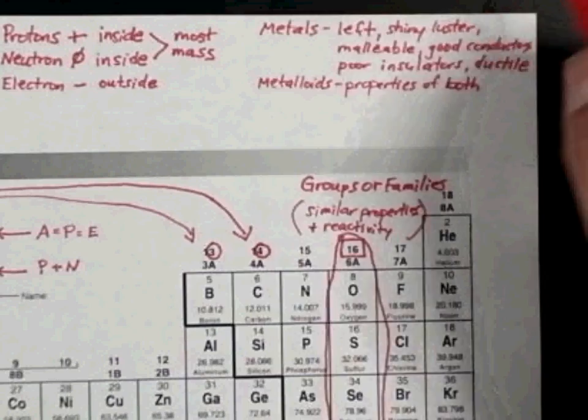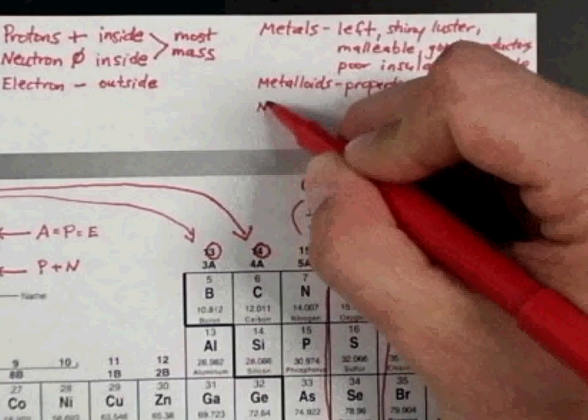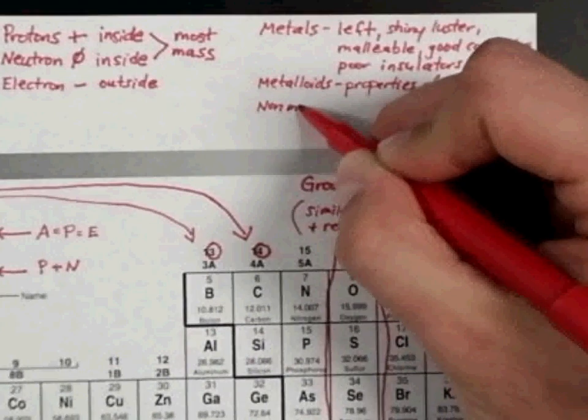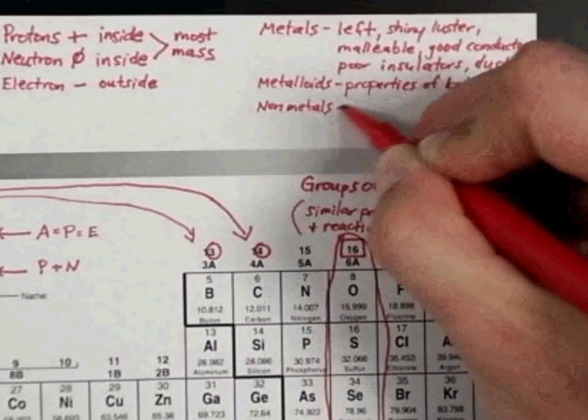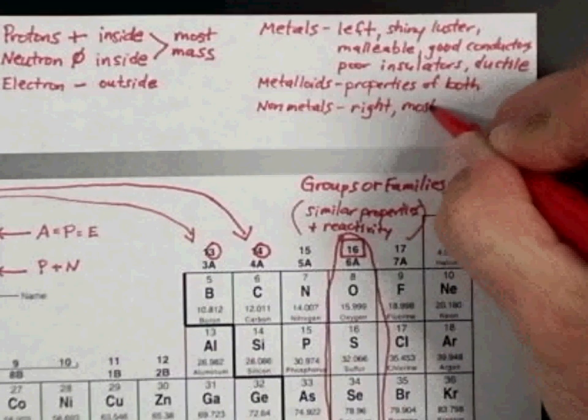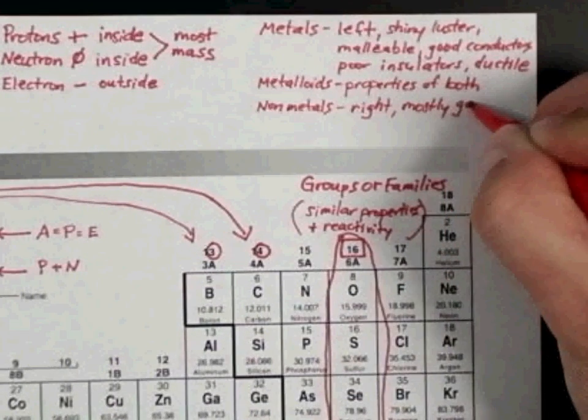And then lastly, we have non-metals. Non-metals are on the right side of the periodic table, they are to the right of the staircase. And they are mostly gas. There are some exceptions to that, just like in everything in science.